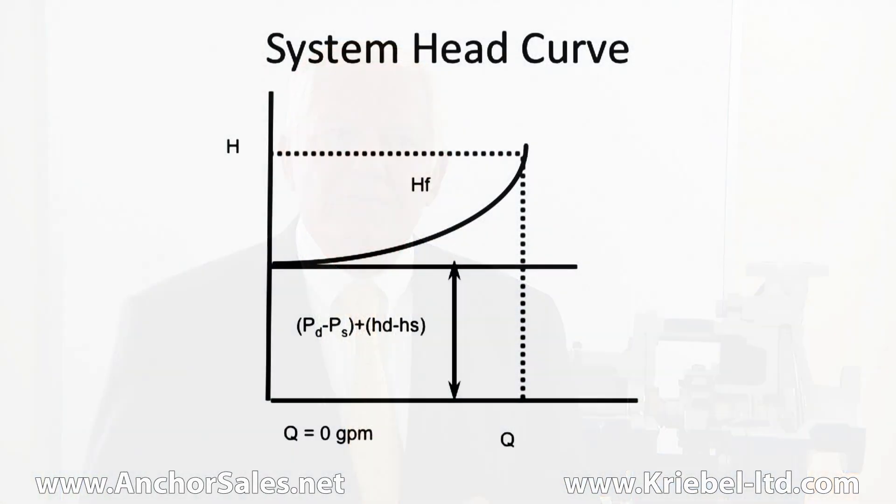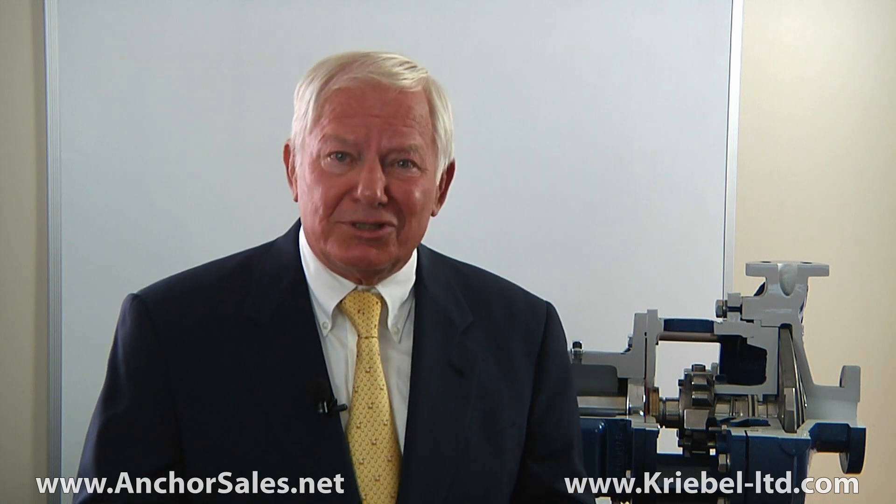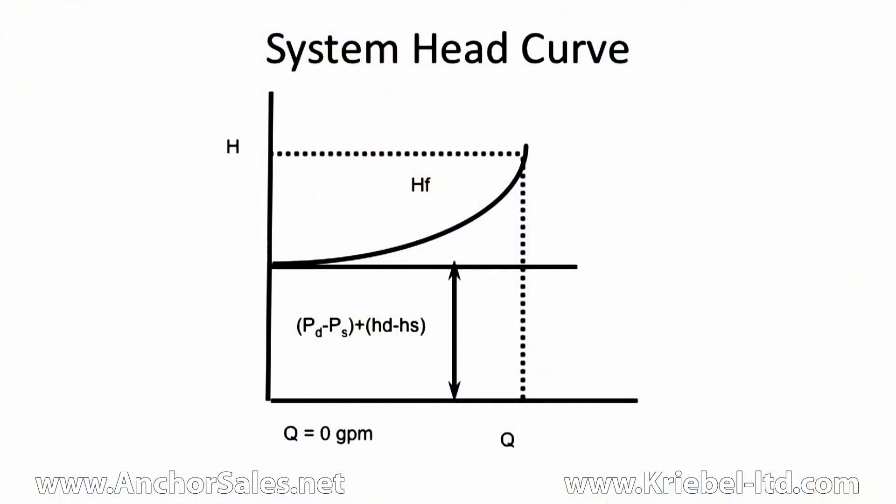From this data, you plot a system head curve. The system head curve is a chart that shows the head in feet on the vertical axis and the flow rate in gallons per minute on the horizontal axis. The static head is the pressure head and the elevation head, and that's constant throughout the pumping system at zero flow and full flow — that's why we call it static head. To that, we add the resistance to flow or the friction head. Those components added together is the total dynamic head that the pump system is designed for.